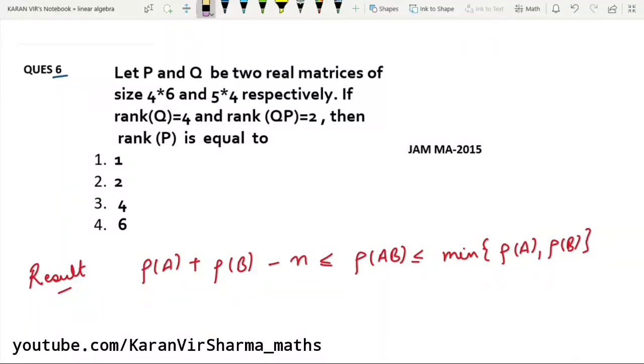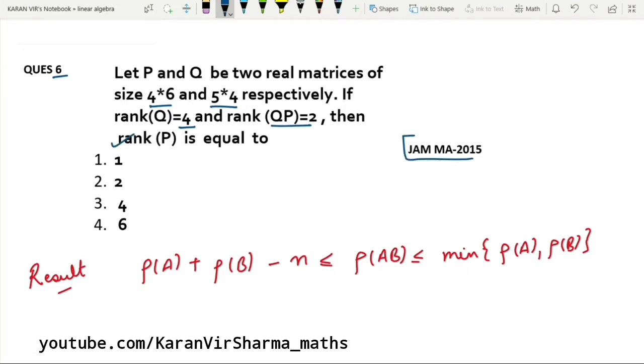Hi friends, welcome to the lecture series of previous year questions. Our sixth question is: Let P and Q be two real matrices of size 4×6 and 5×4 respectively. If rank of Q is 4 and rank of QP is 2, then we will find rank of P. This is JAM 2011.